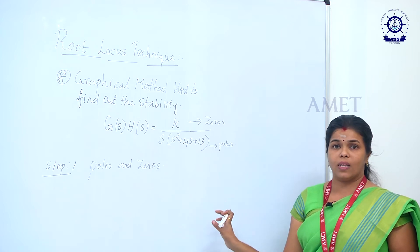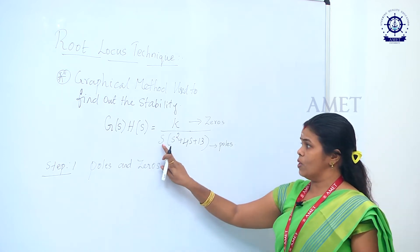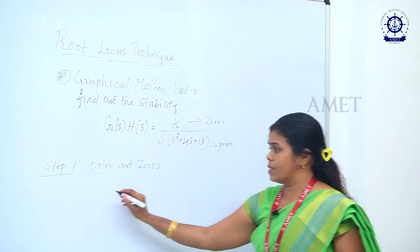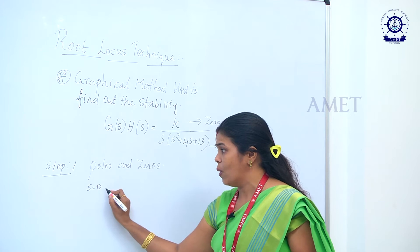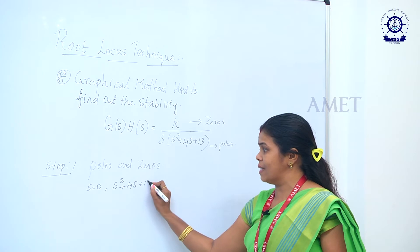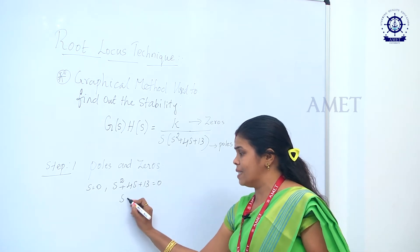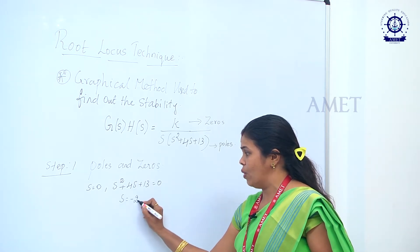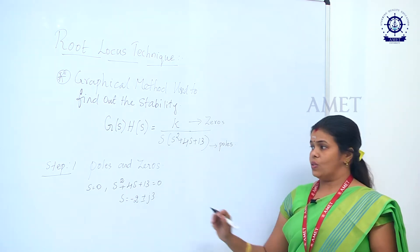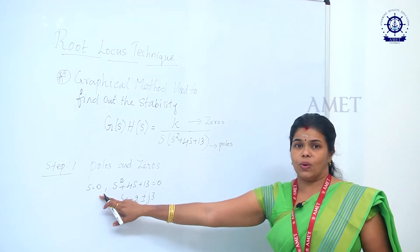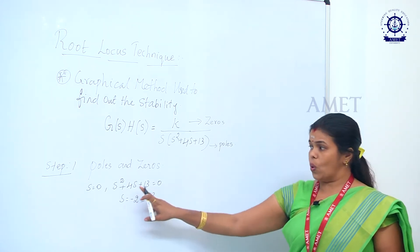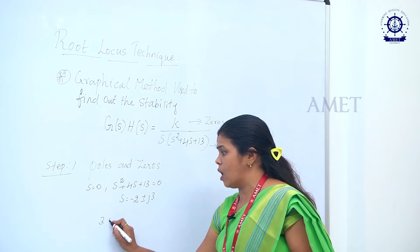The next step is to find what the poles are. The poles are: s = 0 (from the s term), and from s² + 4s + 13 = 0, we get s = −2 ± j3, which is a complex pole. So we have found the poles: one pole at s = 0, and one complex pole at s = −2 ± j3. In total this system has 3 poles.